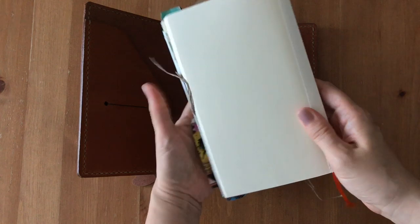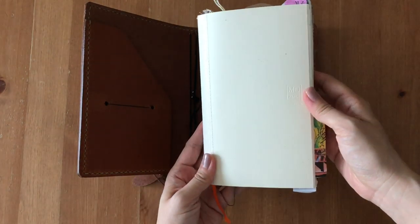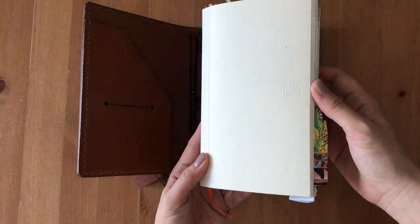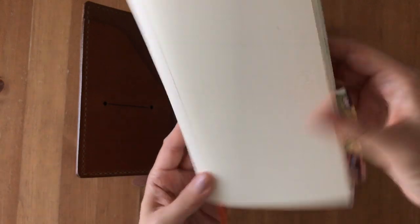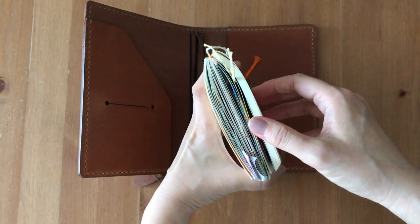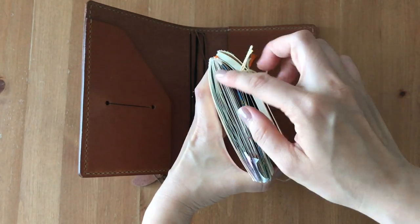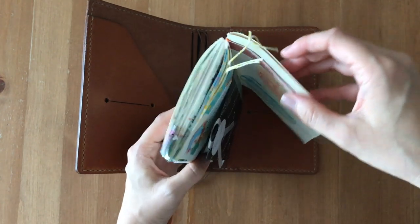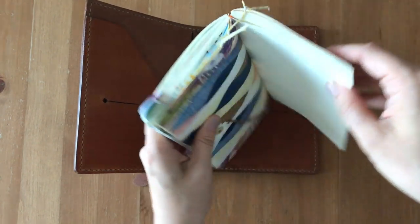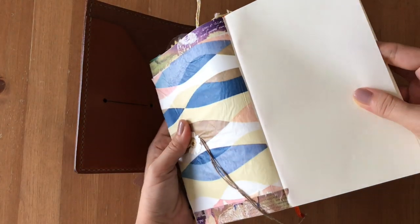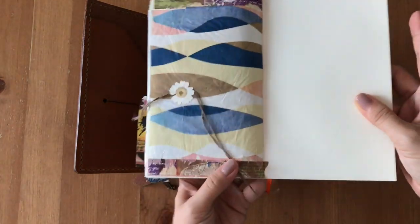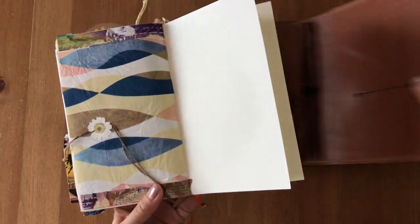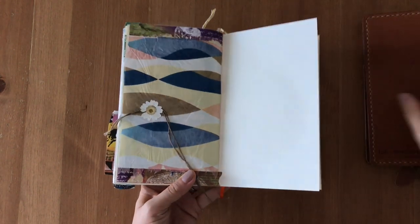This is a Midori B6 slim-sized notebook with MD paper. As you can see, it's starting to curl a little bit there, and I thought I would cut it in half and share with you how I do it on camera, because I think somebody requested that I do this so you can see how I do it.